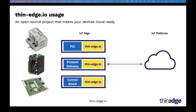The use cases for ThinEdge are, for example, situations where a customer already has an edge device or different software components for it. Or the customer has a local machine with a PLC and now wants to connect this machine to the cloud to do, for example, device management. Or customers that have various protocol gateways for different industry protocols, which need to be connected not only to the local SCADA system, but also to an IoT platform to do, for example, device management.